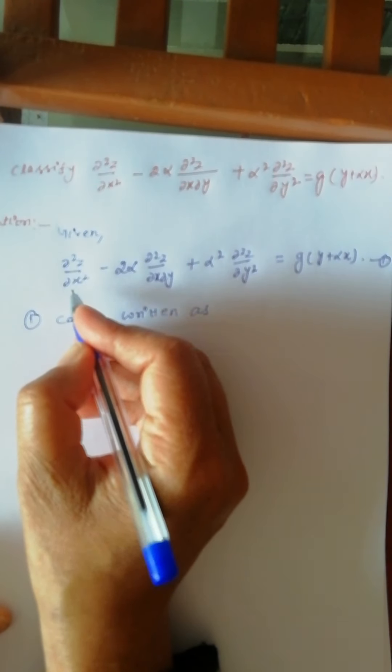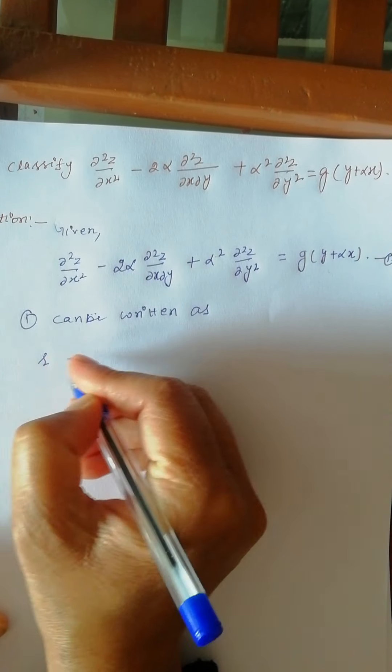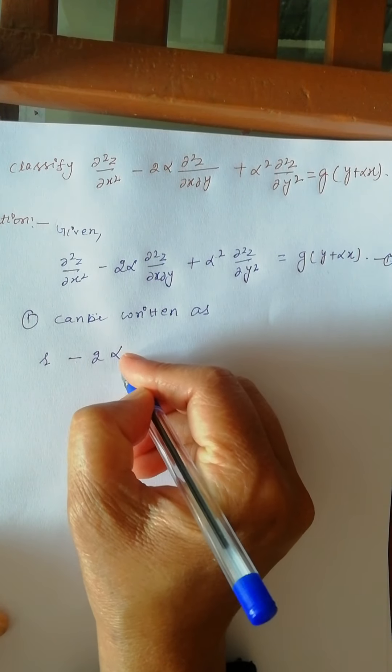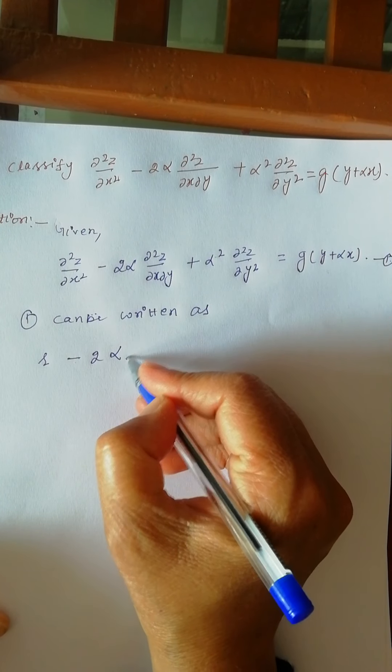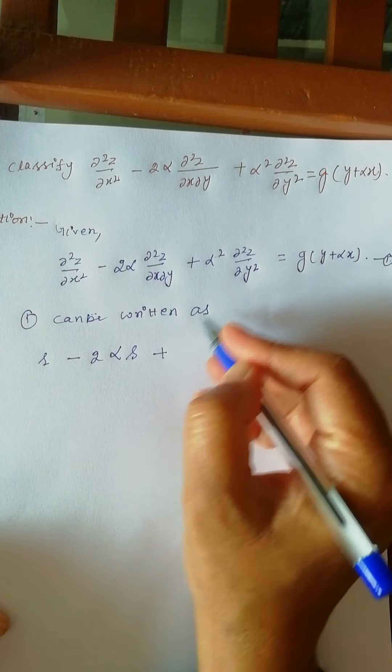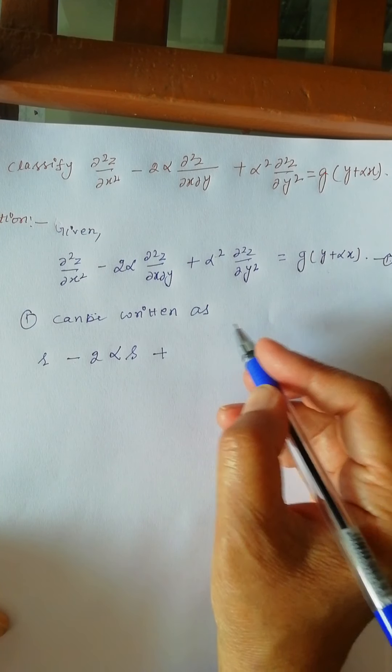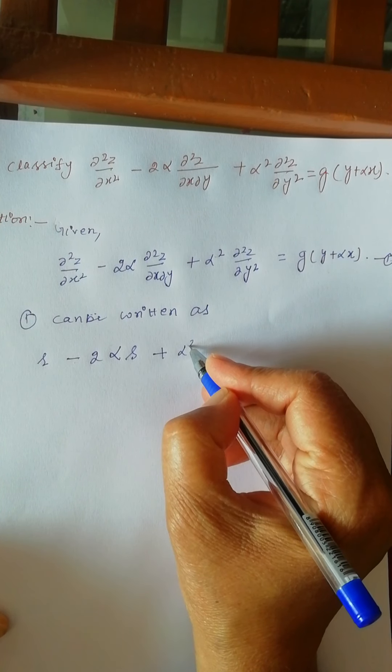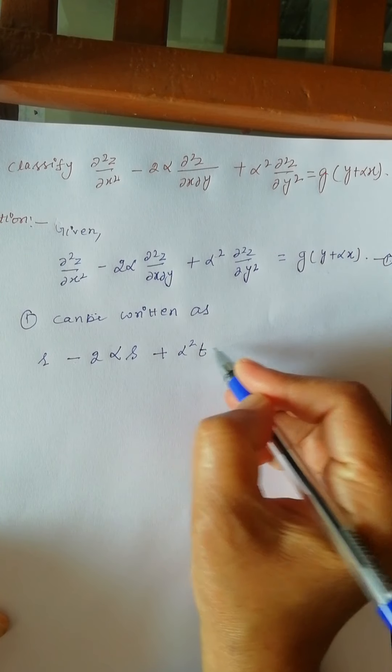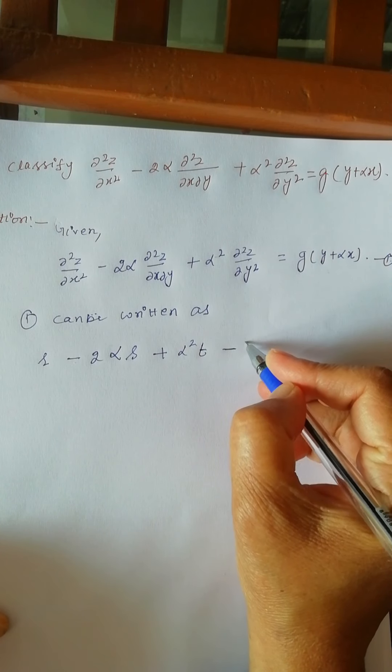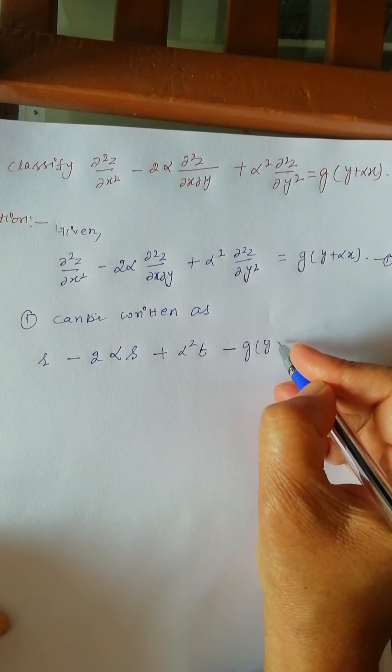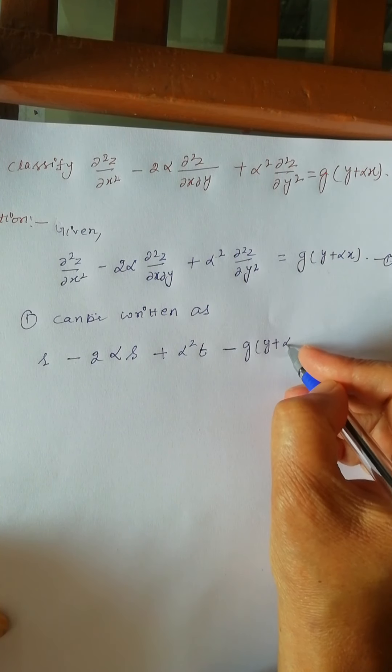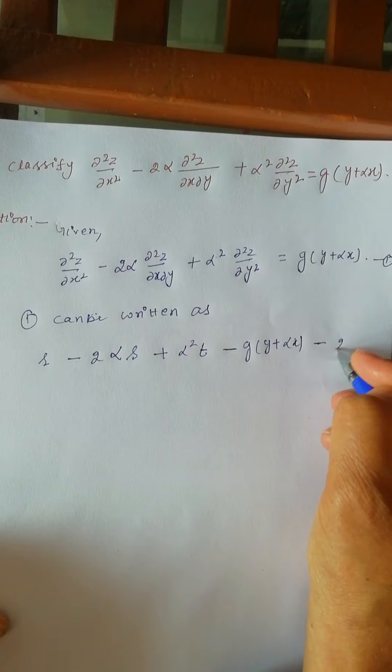What is ∂²z/∂x²? It is r minus 2α. What is ∂²z/∂x∂y? It is s plus, what is ∂²z/∂y²? You know students, it is t. Take this to this side, z is a function of (y + αx). Let it be equation (2).